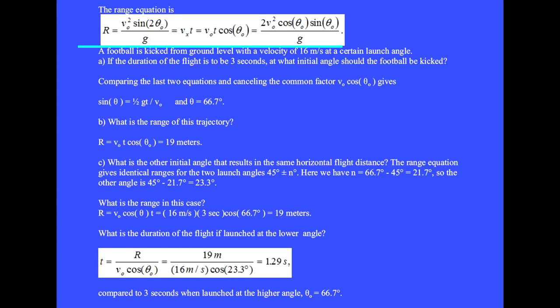Here is the range equation. In this problem, a football is kicked from ground level with a velocity of 16 m/s at a certain launch angle. Question A: If the duration of the flight is to be 3 seconds, at what initial angle should the football be kicked? Comparing the last two equations and canceling the common factor v₀cos(θ₀) gives sin(θ) = (1/2)gt/v₀. This yields θ = 66.7 degrees.